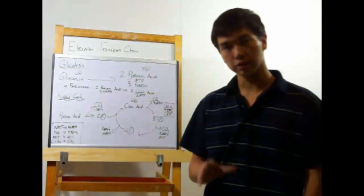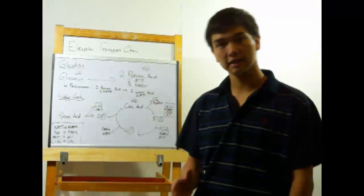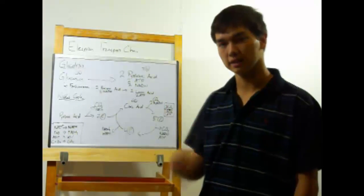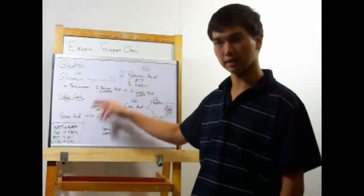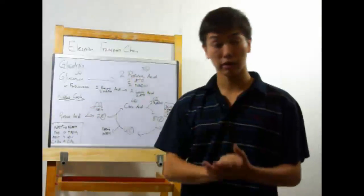The process by which glucose is converted to ATP is known as cellular respiration and occurs in three stages: glycolysis, the Krebs cycle, and the electron transport chain. We're going to go through those right now.